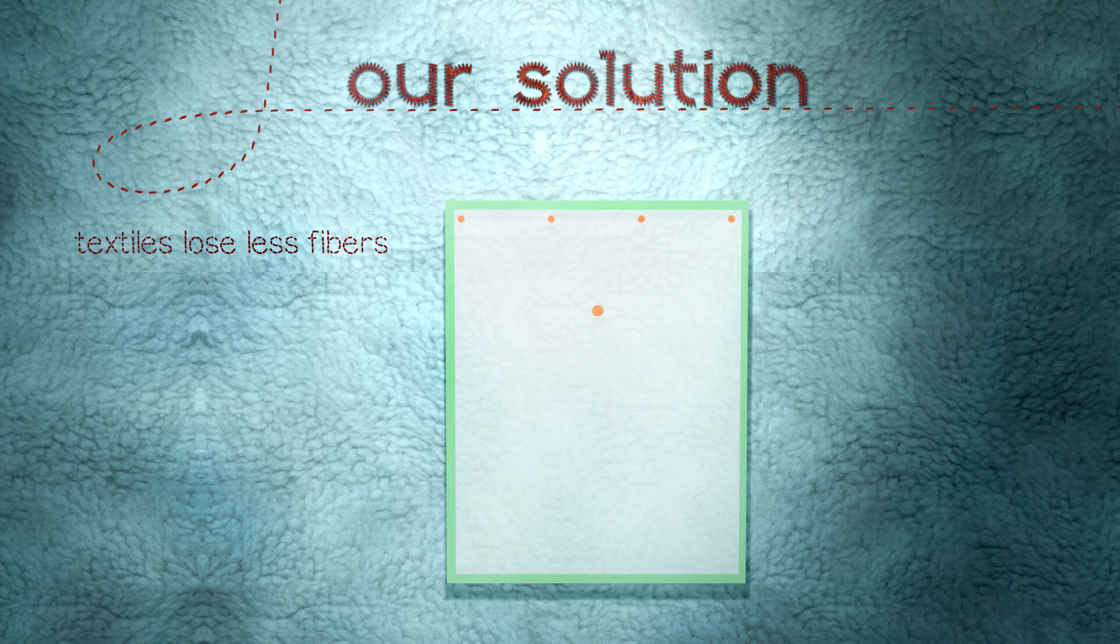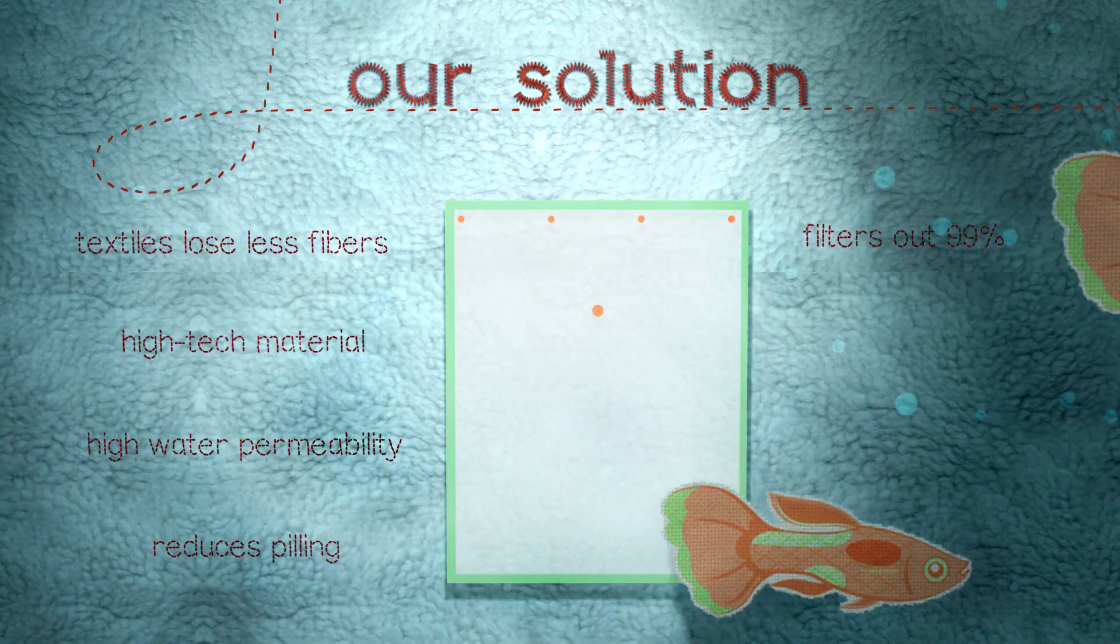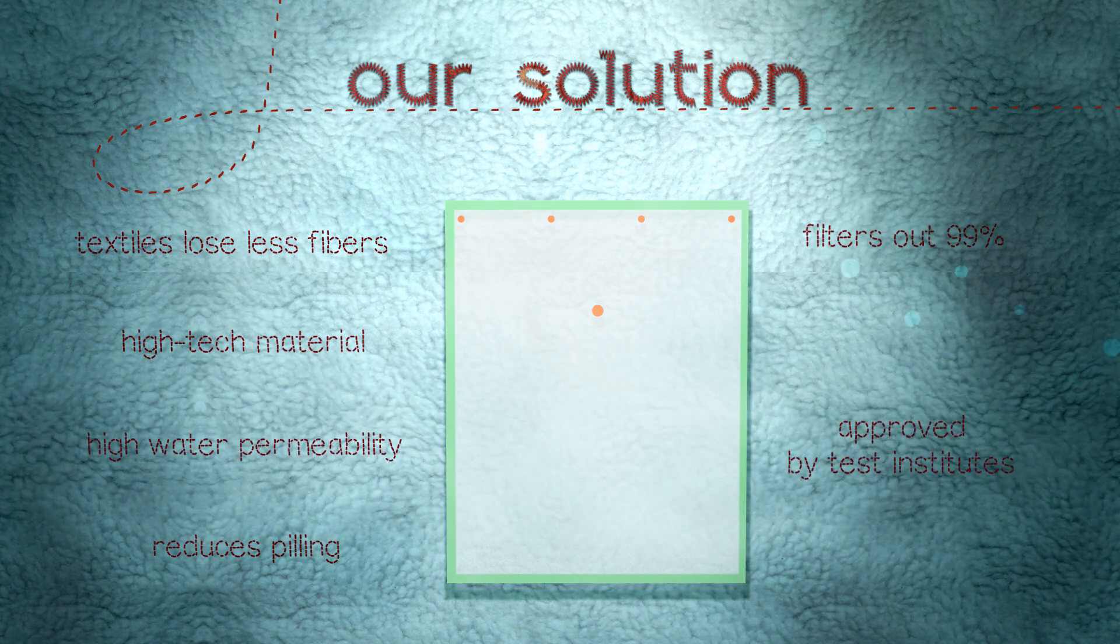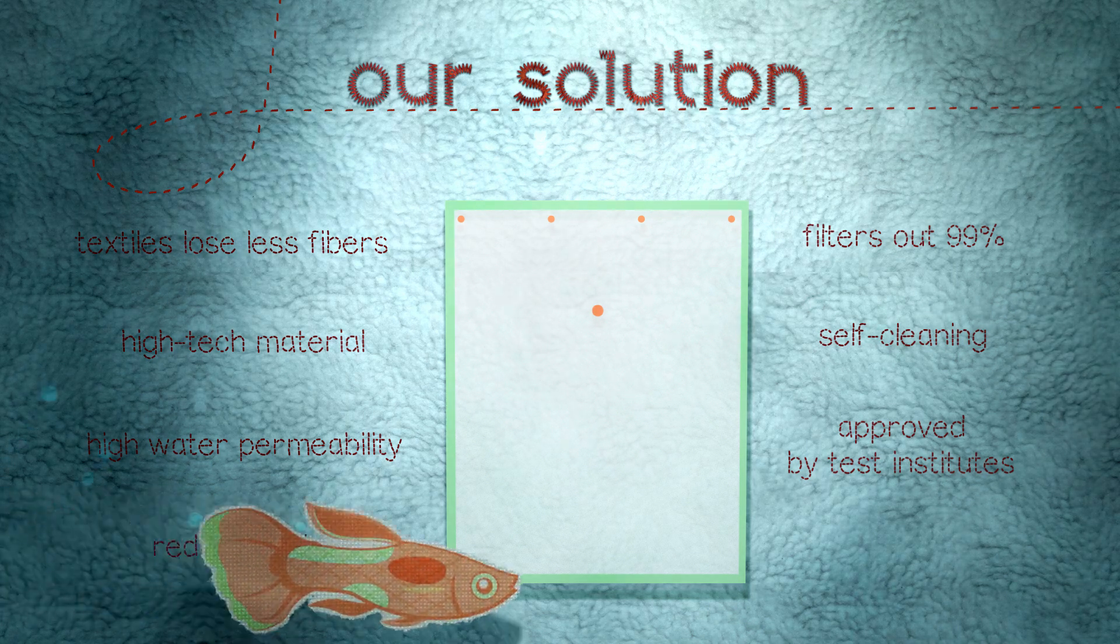Guppy Friend is made of a specially designed microfilter material and captures 99% of fibers released in the washing process. The bag addresses one of the most urgent environmental problems of our time.